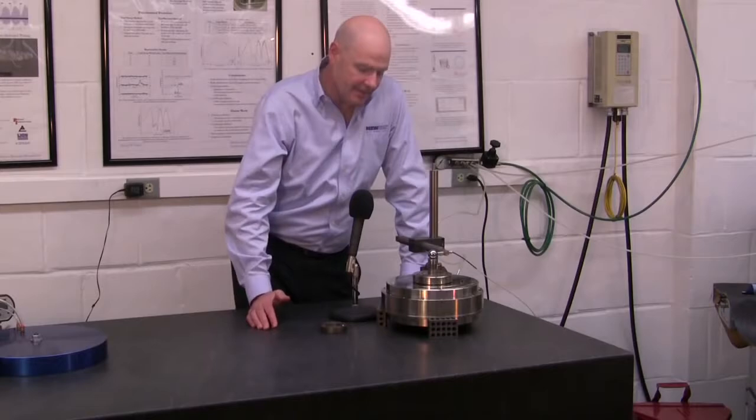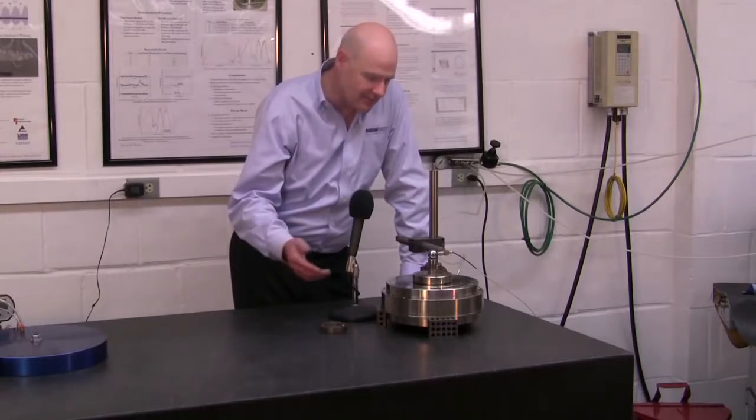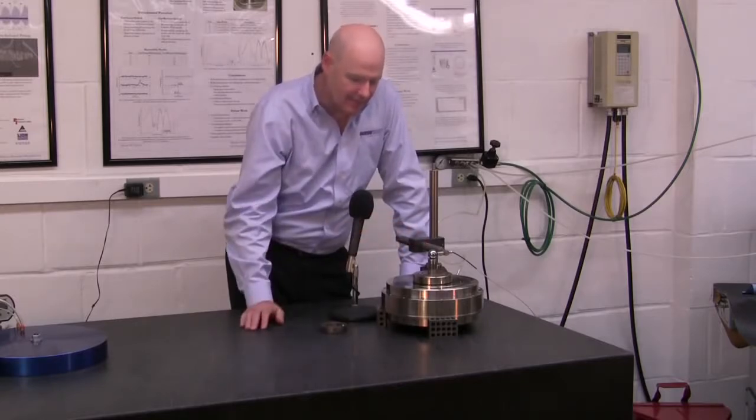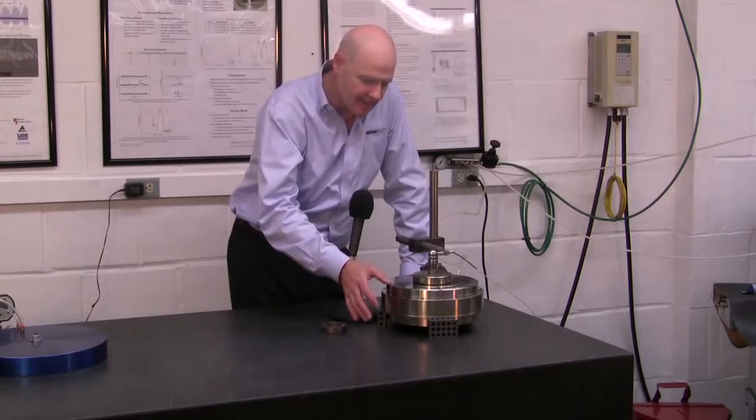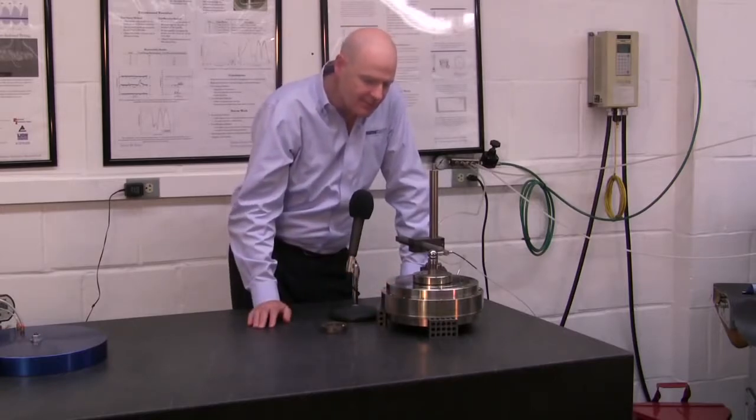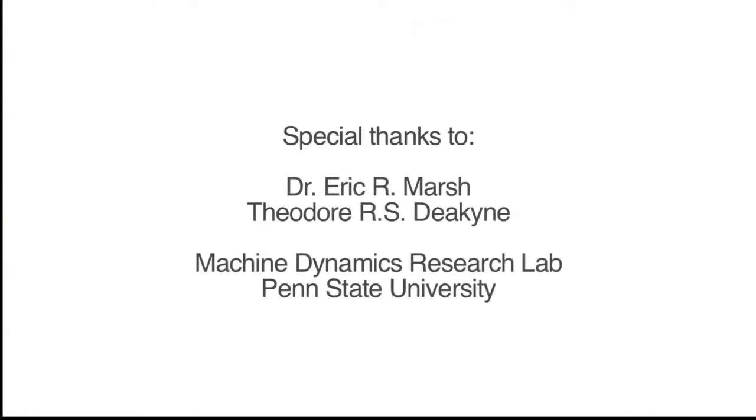The only way you can determine something like that is with a very high resolution non-contact probe and a very accurate ball. The error motions of this New Way air bearing spindle are on the order of two millionths of an inch. Thank you.